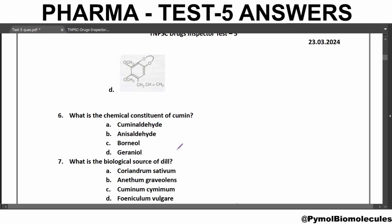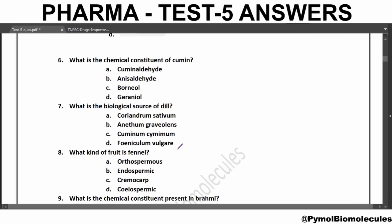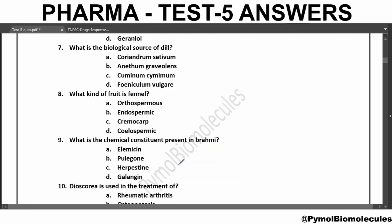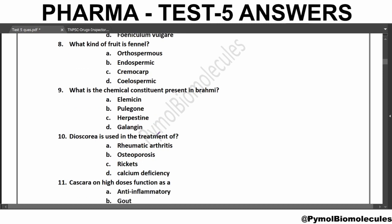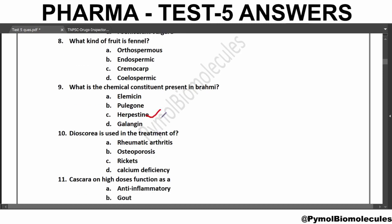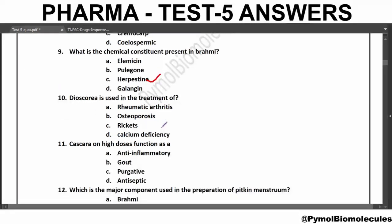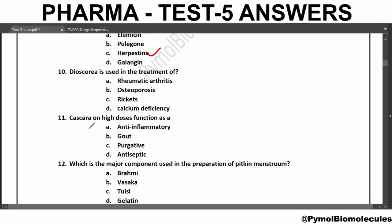What is the biological source of Dill? The biological source of Dill is Anethum graveolens. What kind of fruit is Fennel? Fennel is an orthospermus fruit. What is the chemical constituent present in Brahmi? The answer is Hedpastein. Dioscorea is used in the treatment of rheumatic arthritis. Cascara on high doses functions as a purgative.